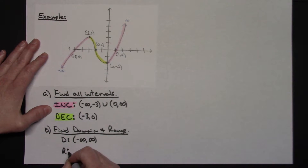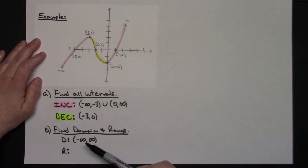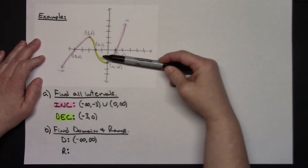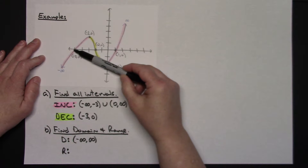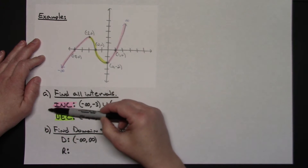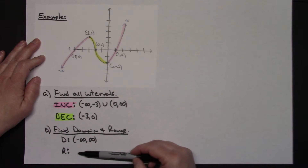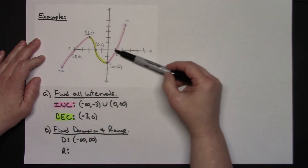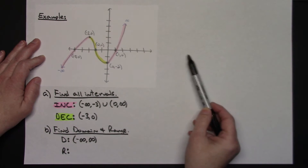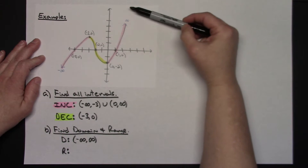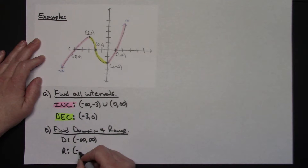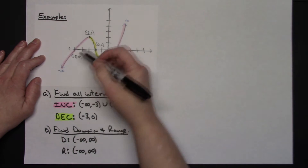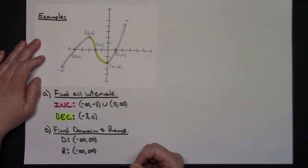Now for range — be careful not to confuse the axes. Since the graph has an arrow going down, it goes down to negative infinity, and since it goes up forever as well, it goes to positive infinity. So the range is also negative infinity to positive infinity — but they're coming from different axes. For polynomial functions, the range will be negative infinity to positive infinity as well.